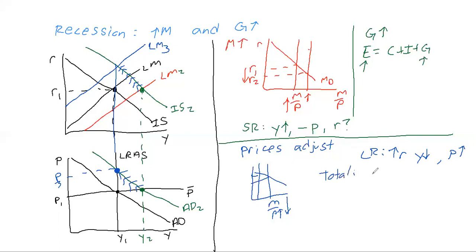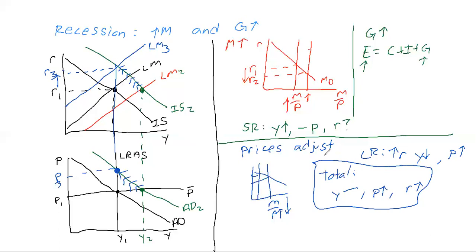Putting this all together: the total change in this economy — output didn't change because there was no change in productivity, prices increased, and in the long run our real interest rates rise all the way up to R3 regardless of what happened in the short run. This is a complex example because of all the moving parts and the questionable short run interest rate change, but it shows that in the short run we're just trying to boost GDP out of recession, while in the long run things fall back to normal with the only real repercussion being increased interest rates.